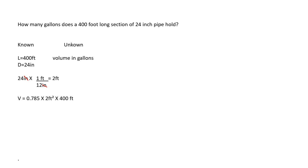So you have 0.785 times 2 feet squared times 400 feet. To break that down even more: 0.785 times 2 feet times 2 feet times 400 feet. When you do all that math, you're going to get an answer of 1,256 cubic feet, because you had feet times feet times feet. But our answer is looking for gallons, so we're going to have to do some more conversions.